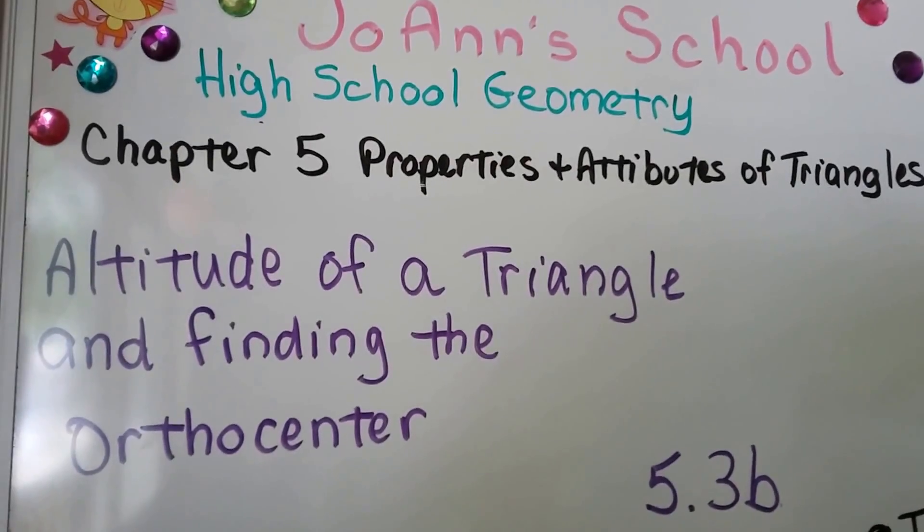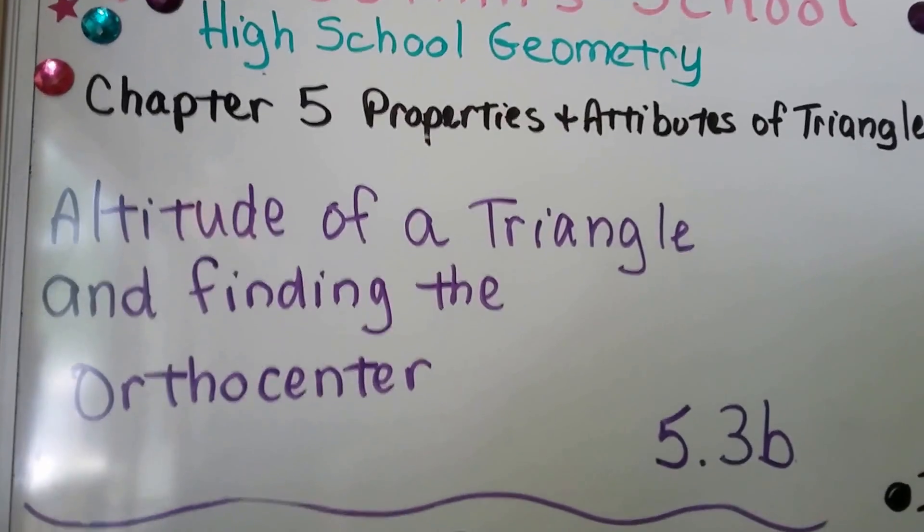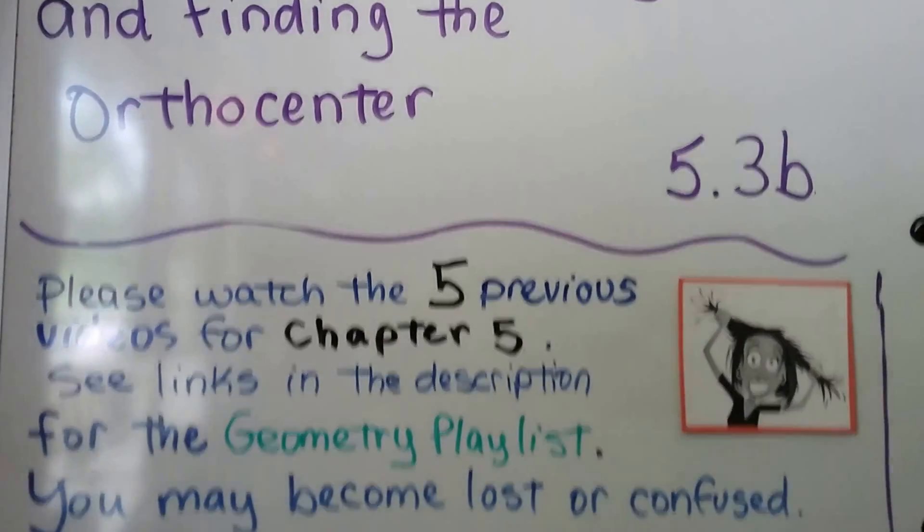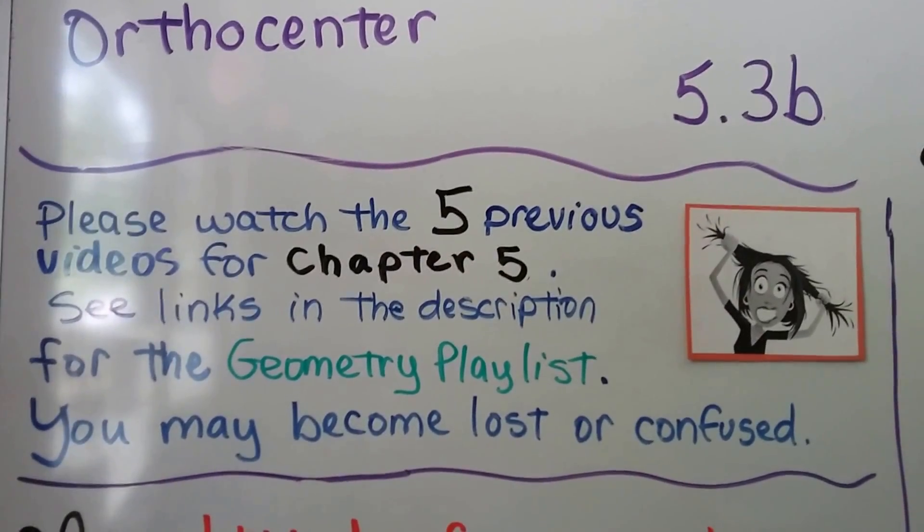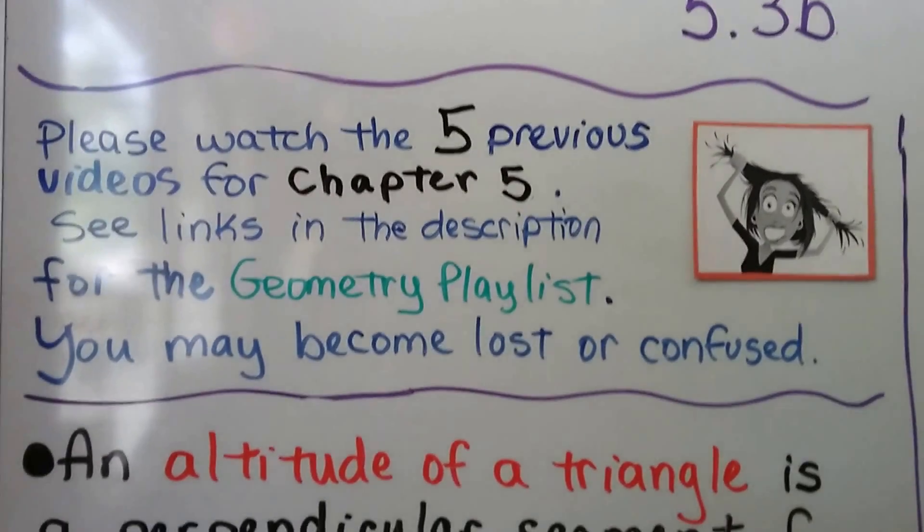Altitude of a triangle and finding the orthocenter. This is 5.3b. We've got five previous videos for chapter 5 and they're linked in the geometry playlist.